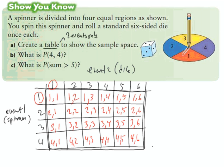Through the miracle of pausing, the table is now filled in and everything in red is your sample space. We can clearly see that there are 24 possible outcomes.